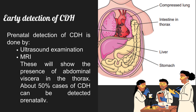Early detection of CDH: prenatal detection is done by ultrasound examination and MRI, which will show the presence of abdominal viscera in the thorax. About 50% of cases of CDH can be detected prenatally.